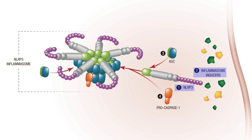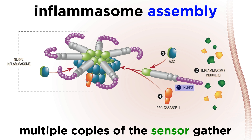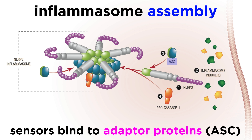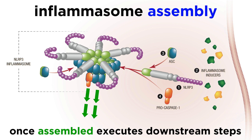Once the sensor is activated, the inflammasome begins to assemble. Multiple copies of the active sensor gather, and each of them bind to the ASC adapter if necessary. Remember that the ASC adapter has a CARD domain that allows Procaspase-1 to bind. The fully assembled inflammasome has multiple subunits of each of the components, meaning that when it's ready it can execute downstream steps quickly.